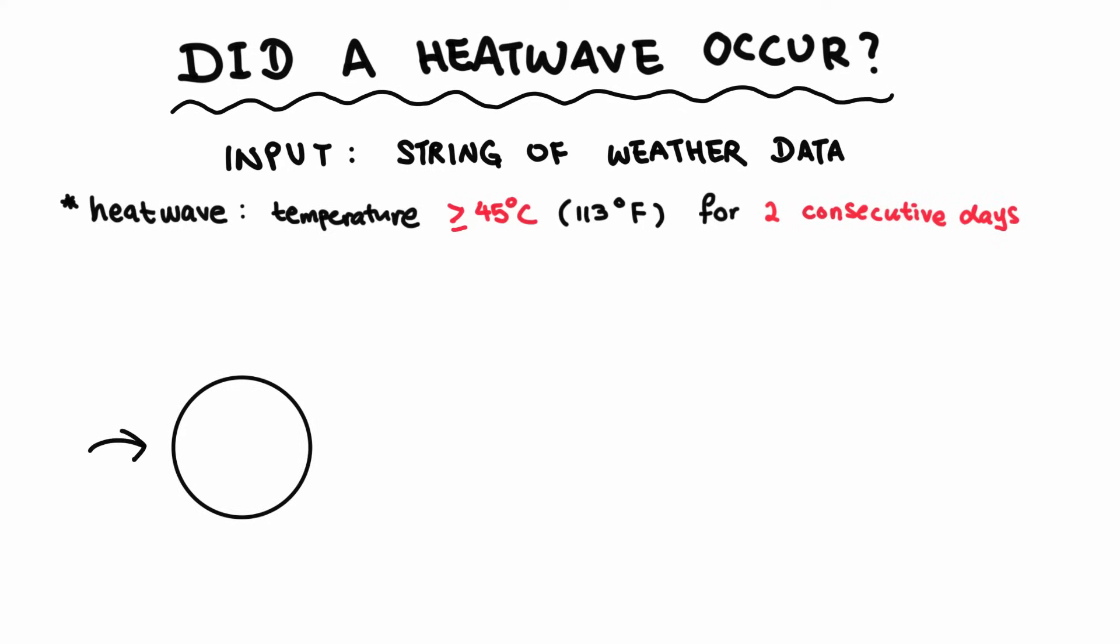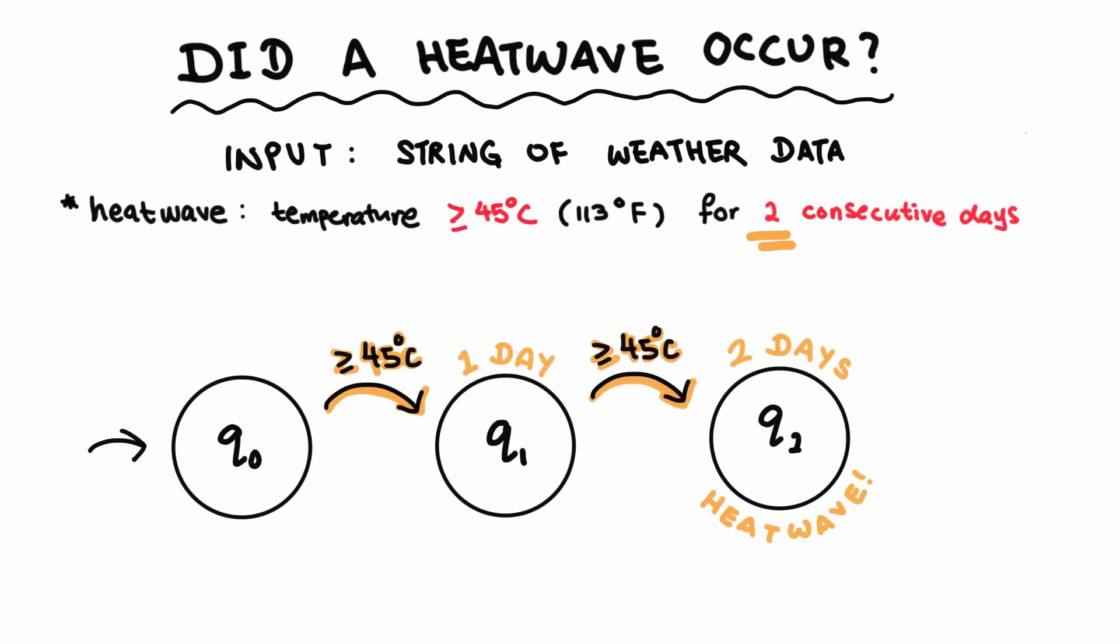Let's say this is our start state, and we're just going to call it Q0. If we hit a day where the temperature is over 45 degrees, we transition into this new state which we will call Q1. And if we hit another day where the temperature is over 45 degrees, we transition into this other state, which we will call Q2. Since a heatwave is defined as having two consecutive days with temperatures over 45 degrees, then when we reach Q2, we know that a heatwave had indeed occurred. So we call Q2 an accept state, and to represent the accept state, we draw another circle around Q2.